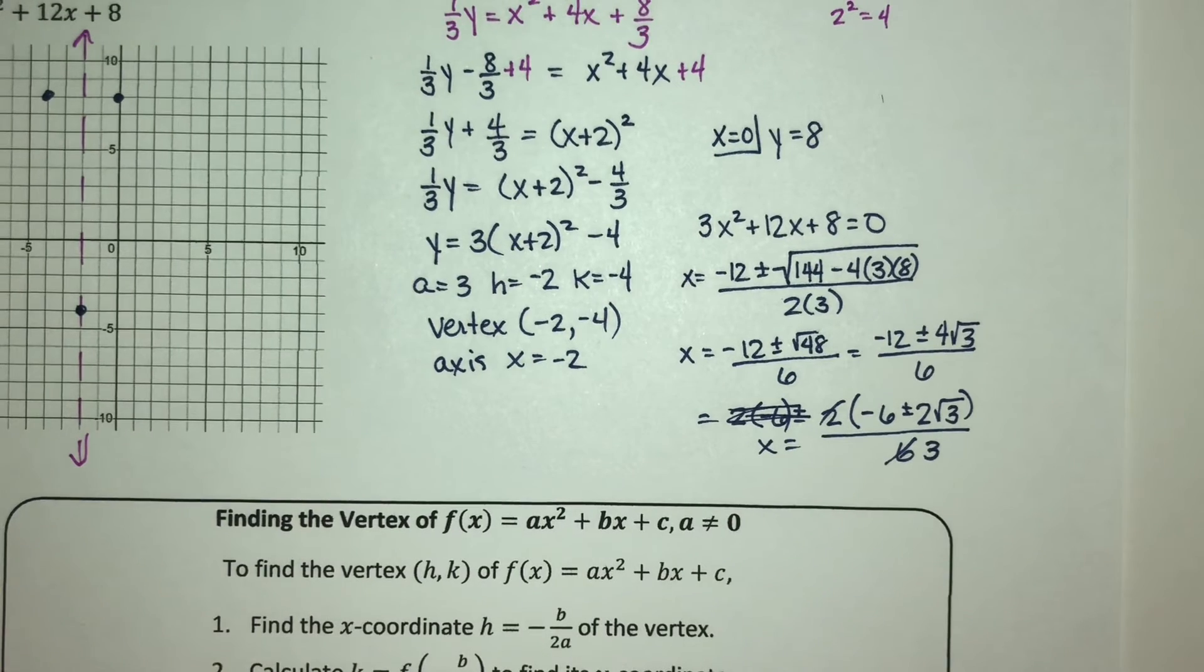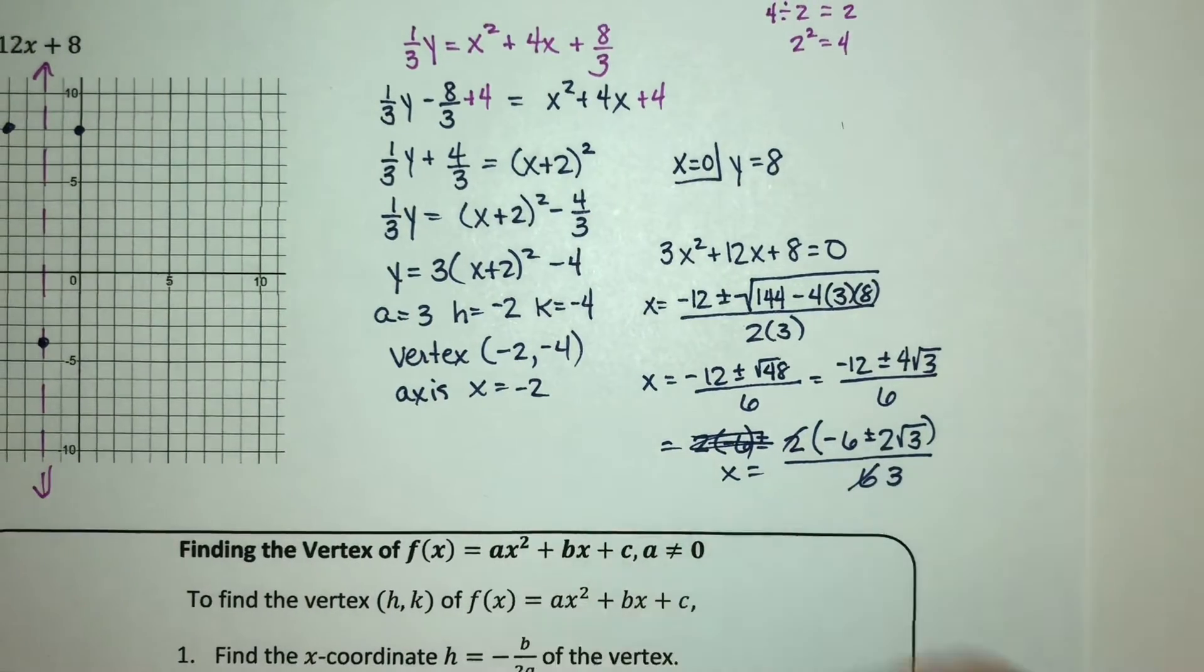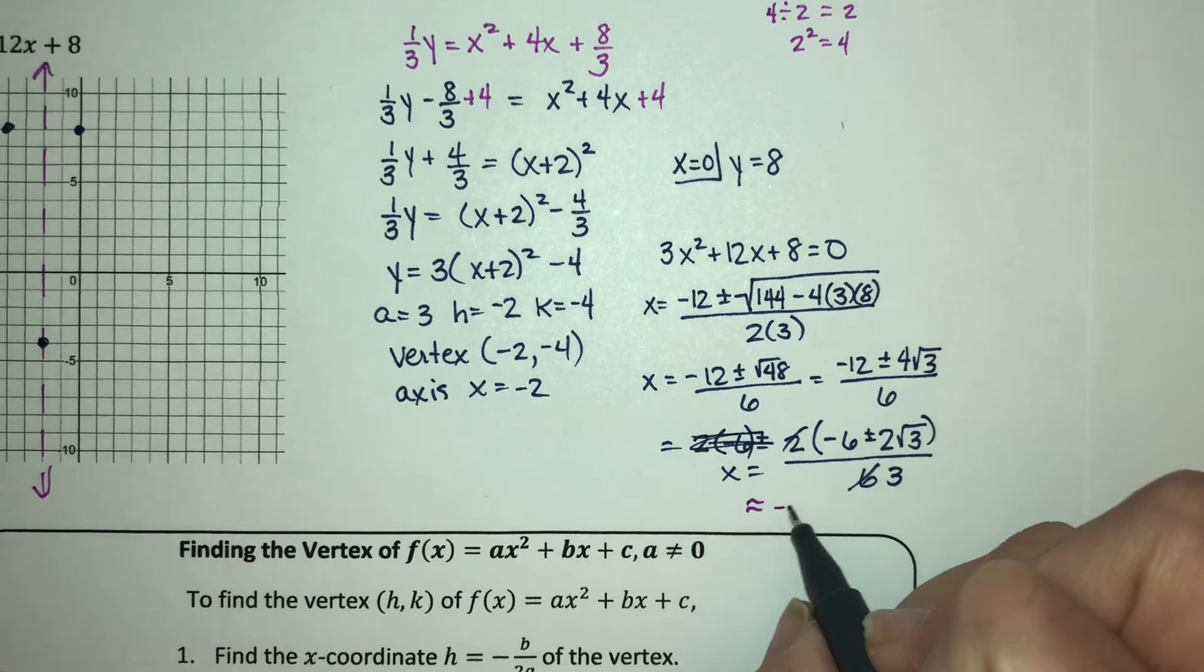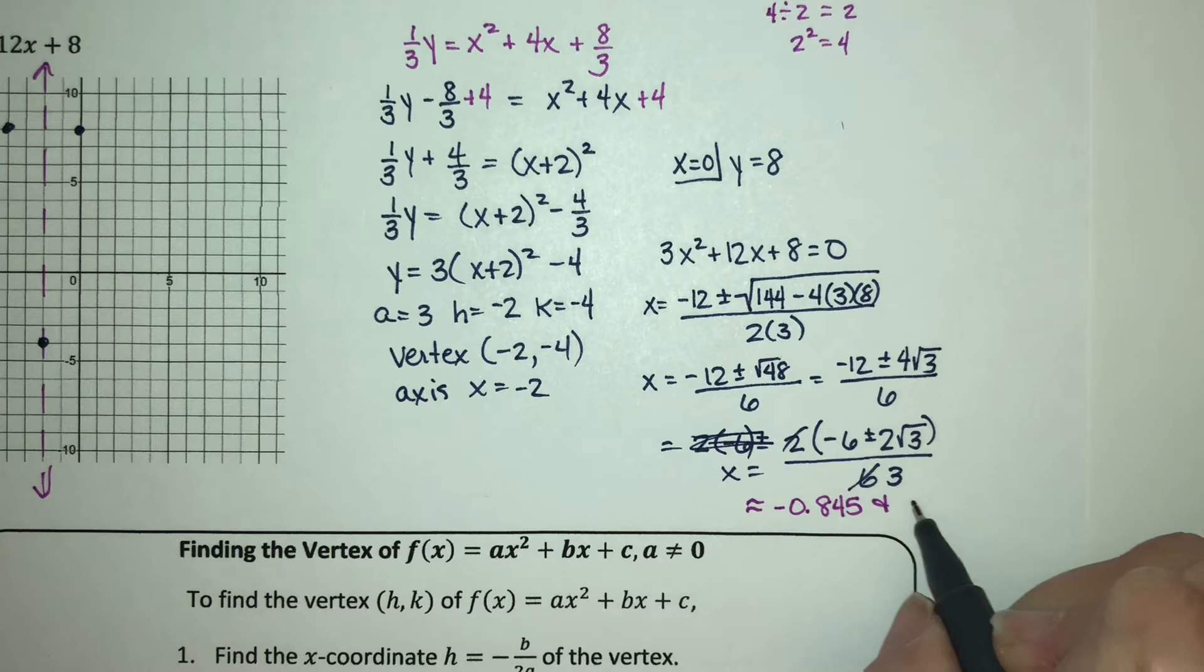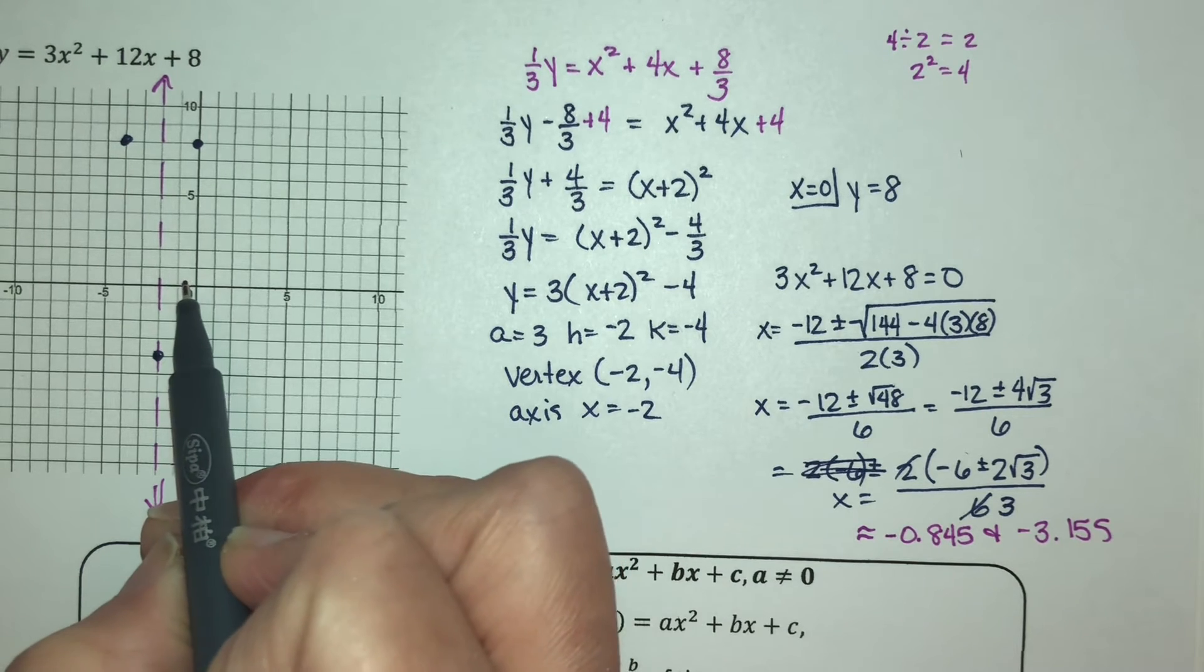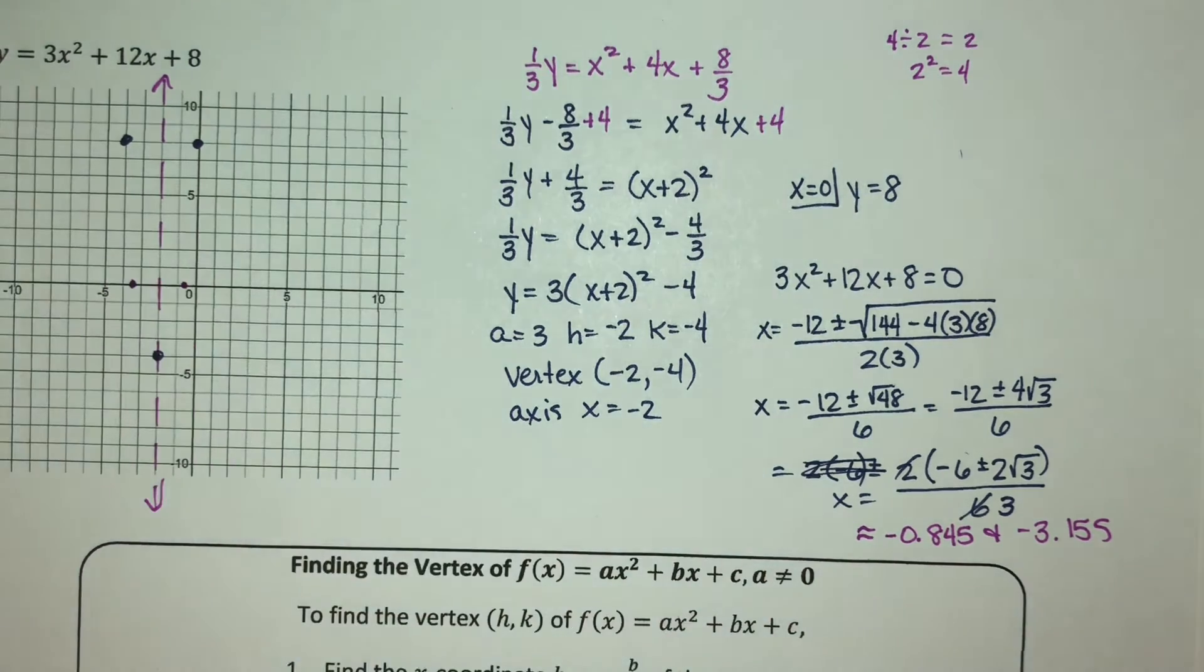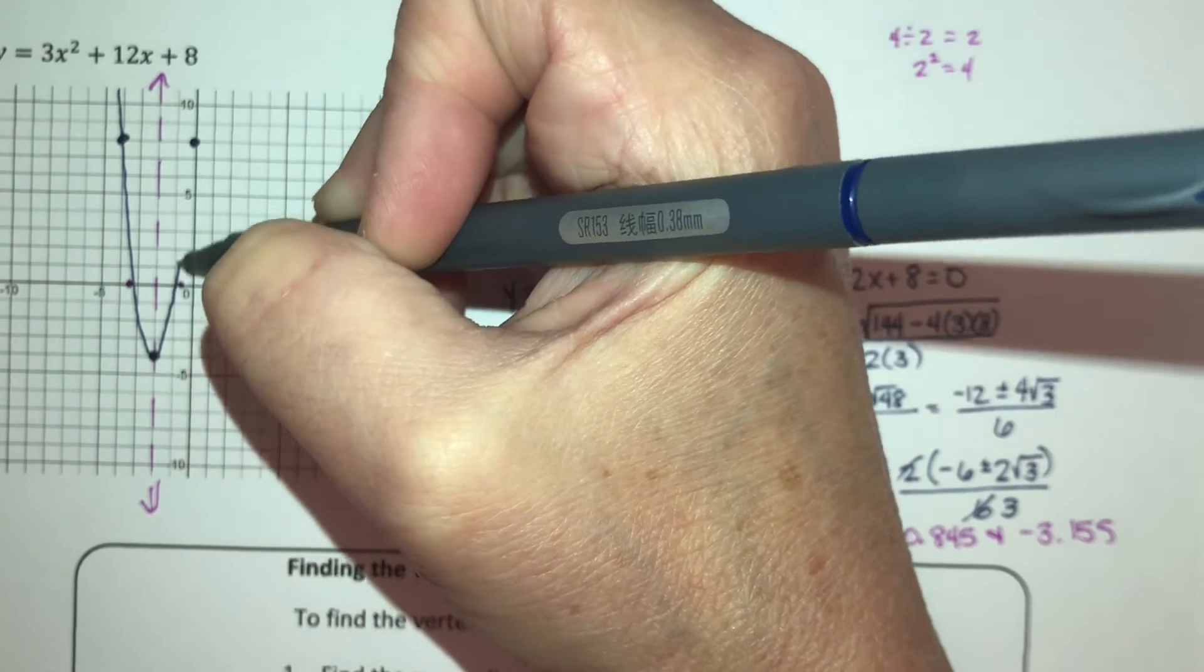Now if you're asked to give your x-intercepts in a problem, this is what you would type in. But when it comes to a graph, we need some approximations. So use your calculator, and you'll see that your x-values are approximately -0.845 and -3.155. So estimate those on your graph here. So -0.845 is not quite to 1, so there. And then a little bit more than 3, so about right there. And then just sketch your graph.